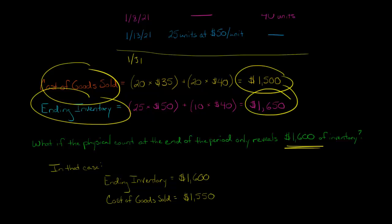So what we're going to do is increase our cost of goods sold by $50 from $1,500 to $1,550. And then we're going to reduce our inventory to $1,600.